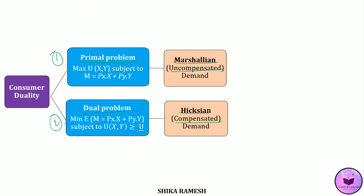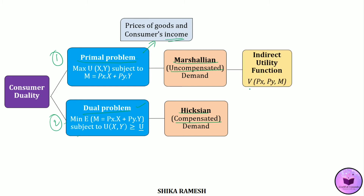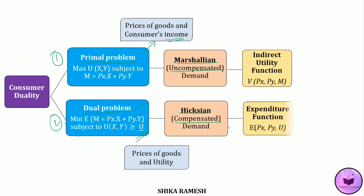The optimal variables of the primal problem include prices of the goods as well as the consumer's income. Taking these two variables as a function, we get the indirect utility function. Similarly, the optimal variables of the dual problem are the prices of the goods as well as utility. Taking these two variables as a function, we get the expenditure function.